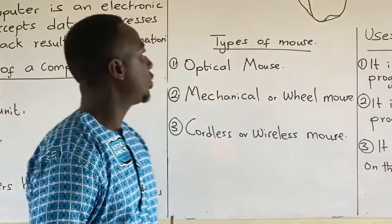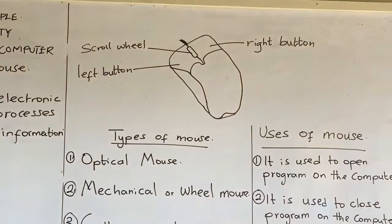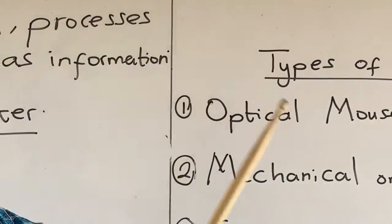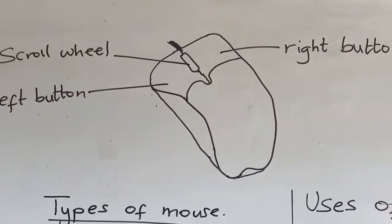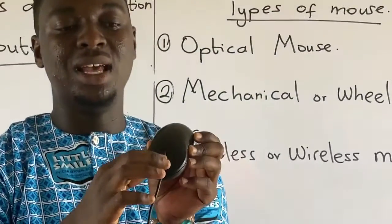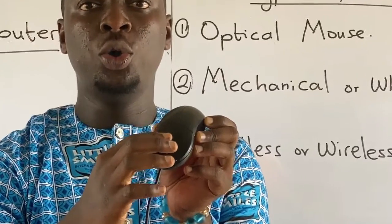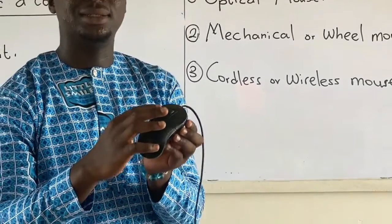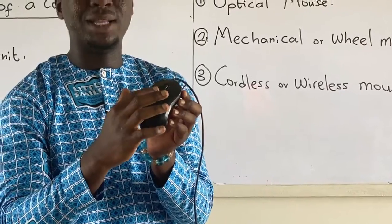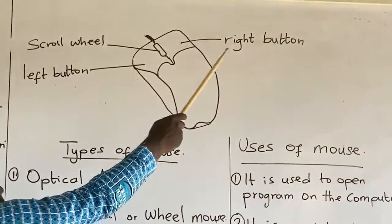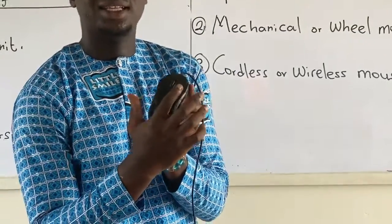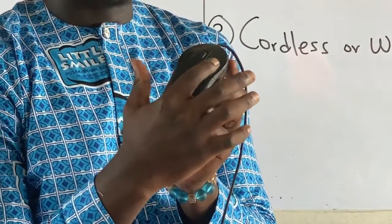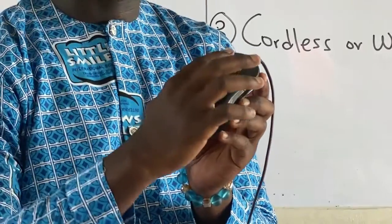Let's look at the mouse and its parts. This is the computer mouse. The parts are: one, the scroll wheel — the one in the middle. Two, the left button — your index finger lies on the left button. Three, the right button — your middle finger will lie on the right button.